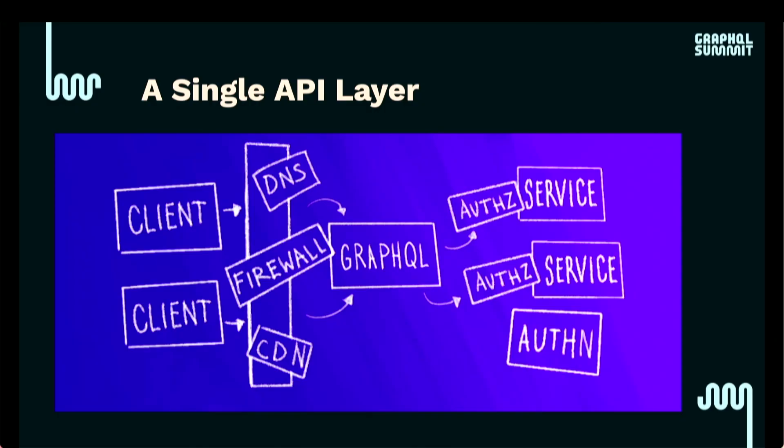One of the things we can do to specifically solve for that BFF problem is pulling in GraphQL. This is the tool we use to consolidate our APIs and do what it promises — give you nothing more, nothing less. And that reduces the amount of complication it takes to build out these frontends. You don't need a team for each backend for frontend, you don't need separate applications — your life gets simpler.